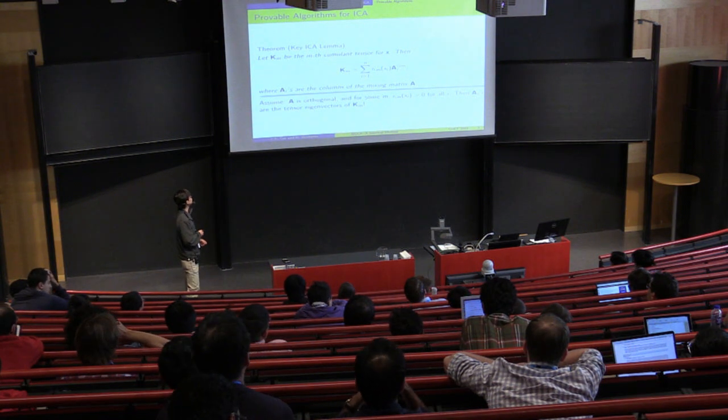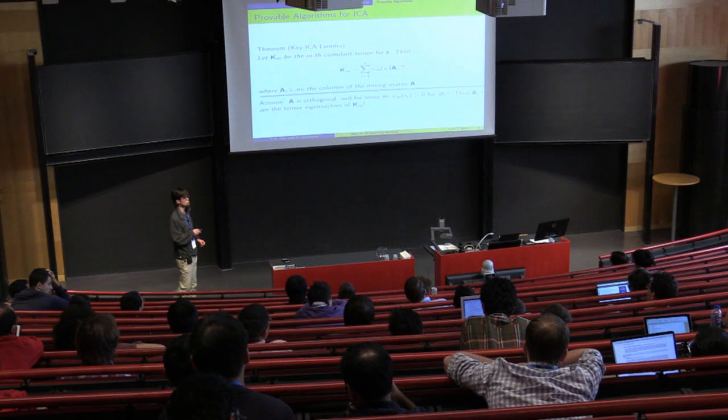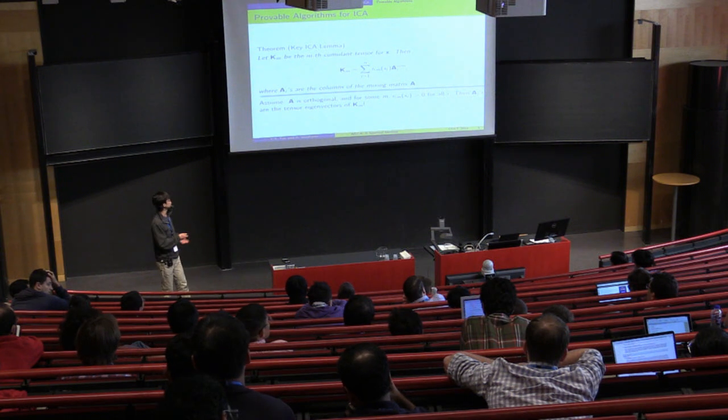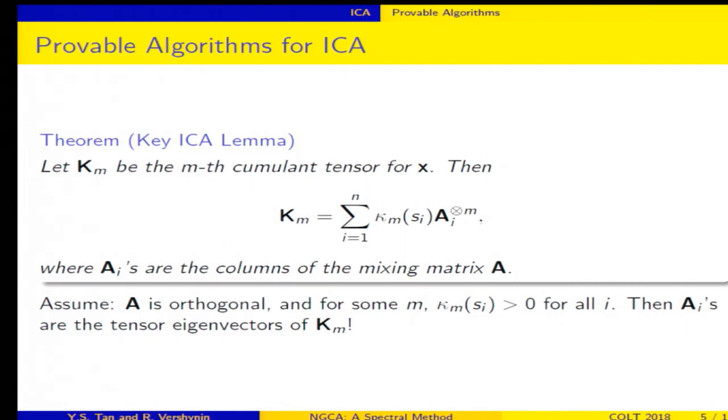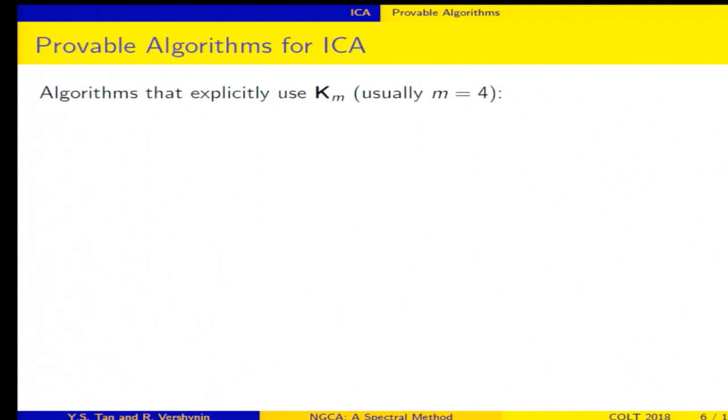And in fact, if we assume A is orthogonal, so this is very easy, you can always just whiten to assume A is orthogonal, and we further assume that for some M, all the M-th cumulants of the SIs are non-zero, then in this case, the AIs are precisely the tensor eigenvectors of KM. Okay, so tensor eigenvectors are nice because they behave very similar to matrix eigenvectors. Okay, so we can use this property to produce algorithms that are provable.